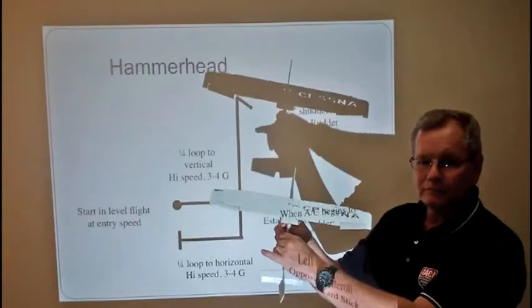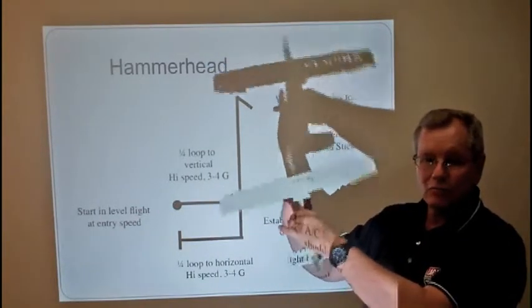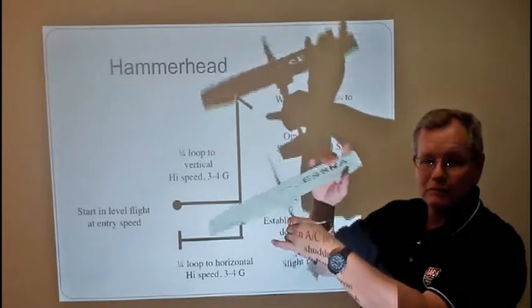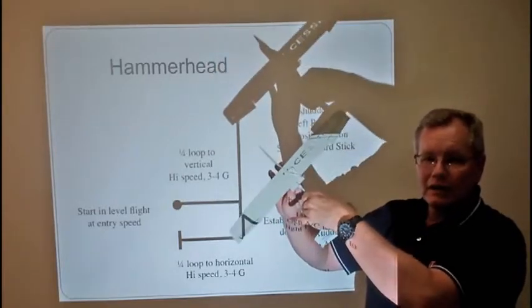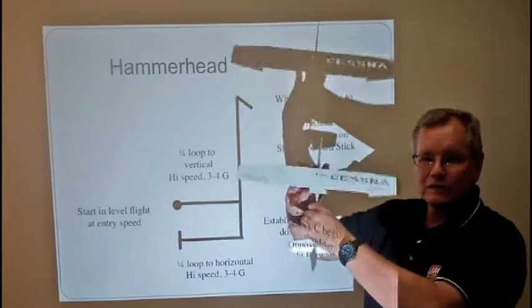So on the upline, as you step on the left rudder, you need to put in right stick as well to keep this wing tip from coming over. And then the airplane is going to start trying to pitch toward the pilot's head and you'll have to feed in forward stick.